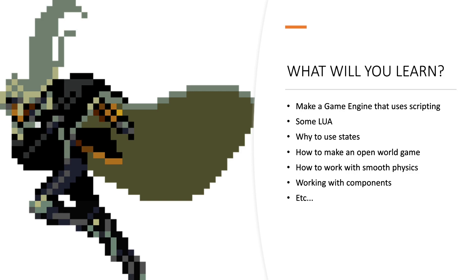How to make an open world game might be something new to you. Open world games are tough because you have to remove parts of the world you don't want to update — you can't update and render the whole world every frame. We'll also cover how to work with smooth physics. We're going to make a simple but very smooth physics engine with nice movements — nothing jittery — based on acceleration and velocity. And we're going to work with components: an even more upgraded component system where you can add anything you want to any entity and it will change that entity to become a player, enemy, or whatever.